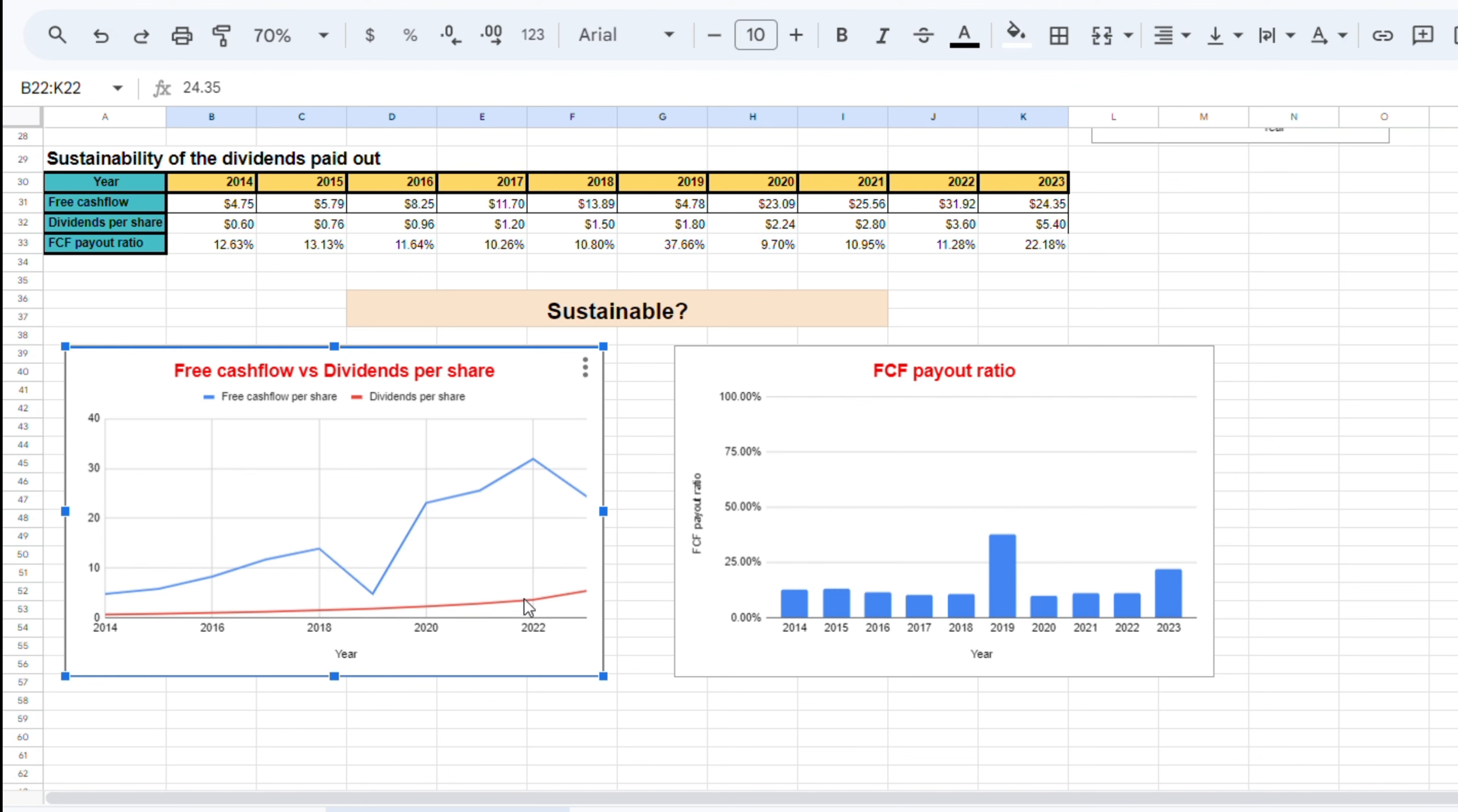On top of this, we want to know how much of the free cash flow is being used to pay out dividends. Here we see that it's only between 10 and 25%, 2019 being the exception. This is a very low payout ratio, meaning that Nexstar has a lot more cash on hand that they can decide to use for other purposes, like reinvest it back into the business, pursue acquisitions, or buy back shares.